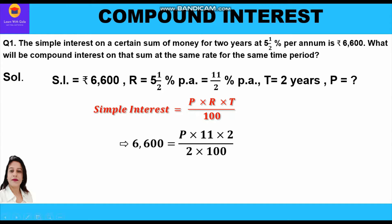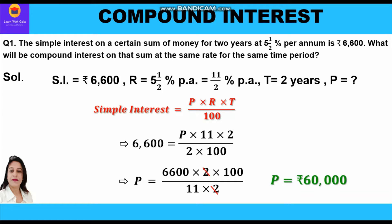Cross-multiplying, P = 6600 × 2 × 100 / (11 × 2). The 2s cancel, and after solving we get the principal as rupees 60,000.